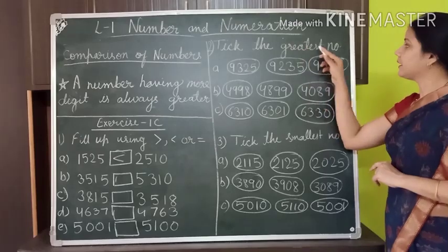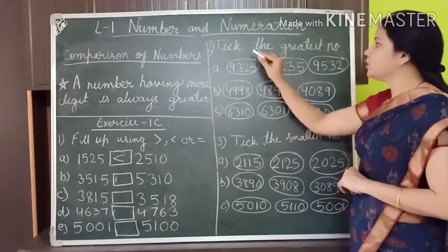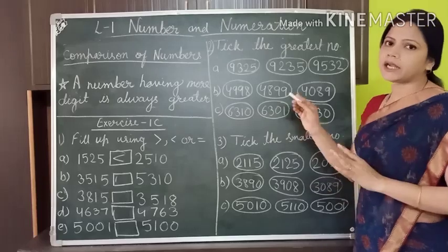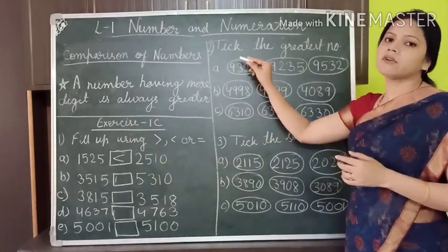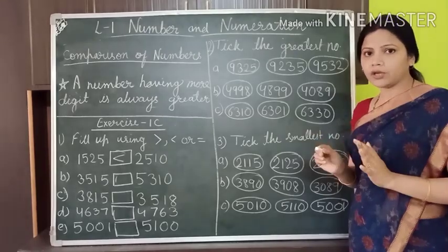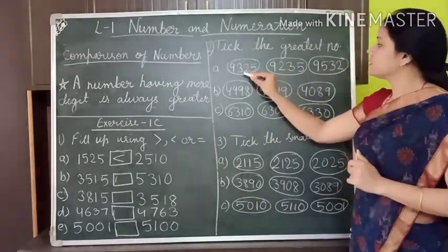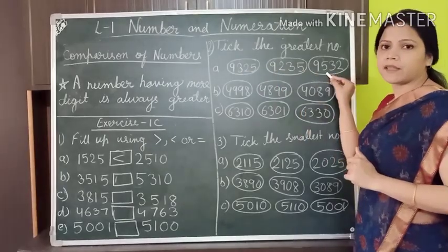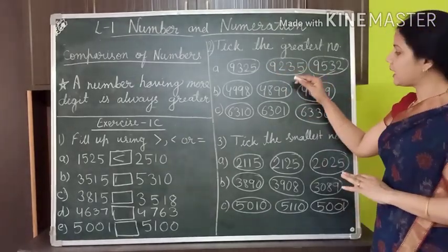The second question is: take the greatest number. Three numbers are given in each question and you have to check which one among these three is the greatest. All numbers are of 4 digits, so we start comparison with the leftmost digit: this is 9, this is 9, and this is also 9 — all same. We jump to the next digit: this is 3, this is 2, and this is 5. Since 5 is greater than 3 and 2, we take that number as the greatest.